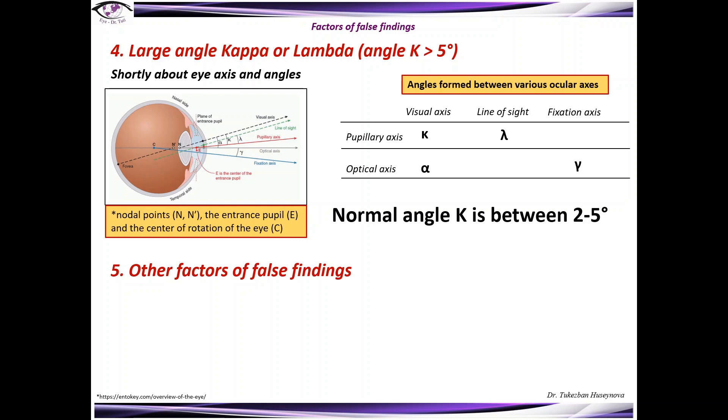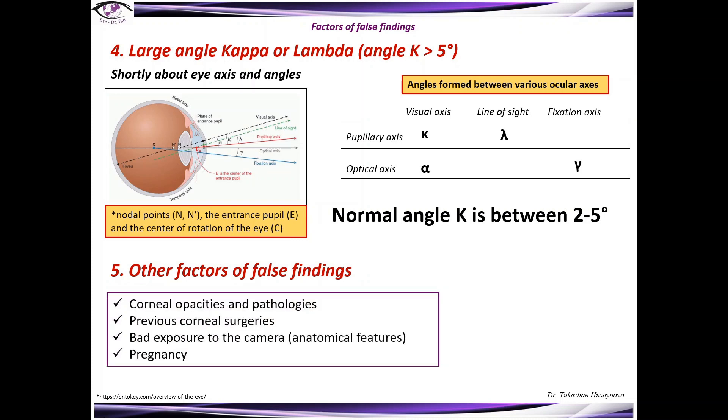Other factors of false findings are corneal opacities, pathologies, previous corneal surgeries, bad exposure to the camera due to anatomical features, and also pregnancy.